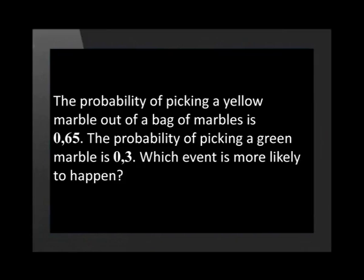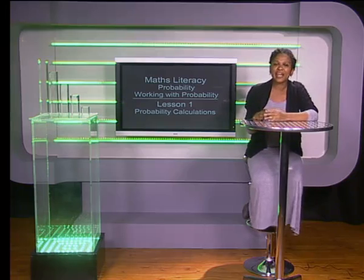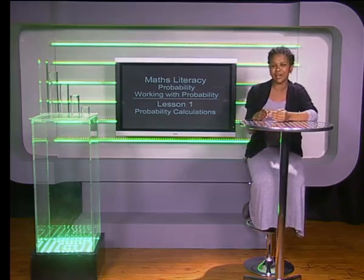Calculating probability is not too bad once we get the hang of it. Why don't you see if you can answer the next question on your own? The probability of picking a yellow marble out of a bag is 0.65. The probability of picking a green marble is 0.3. Which event is more likely to happen? It is more likely that a yellow marble will be picked because this probability has a higher value.